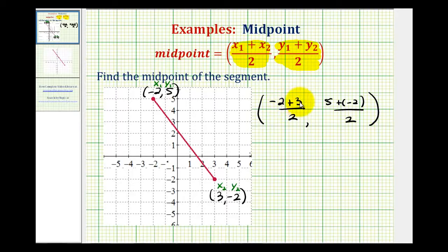Well, negative two plus three is equal to one, so we'd have one half for the x coordinate of the midpoint, and five plus negative two is equal to three, so the y coordinate of the midpoint would be three halves.